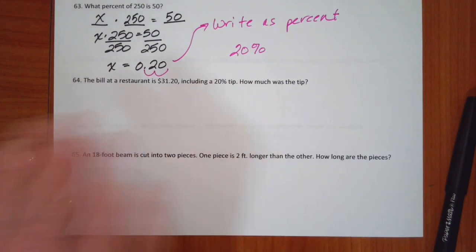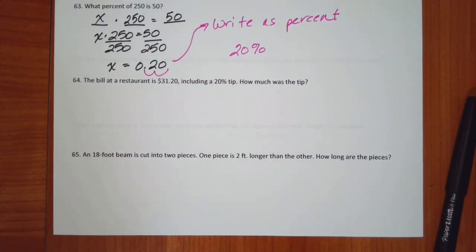Okay, this next one is a little bit more complicated. The bill at a restaurant is $31.20, including a 20% tip. So how much was the tip?